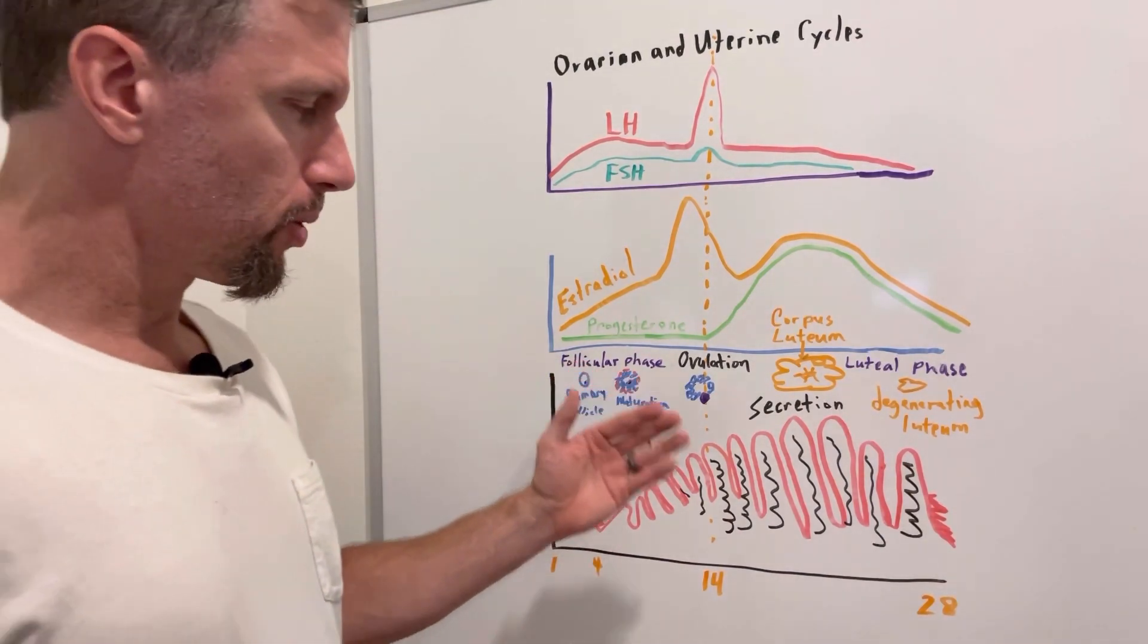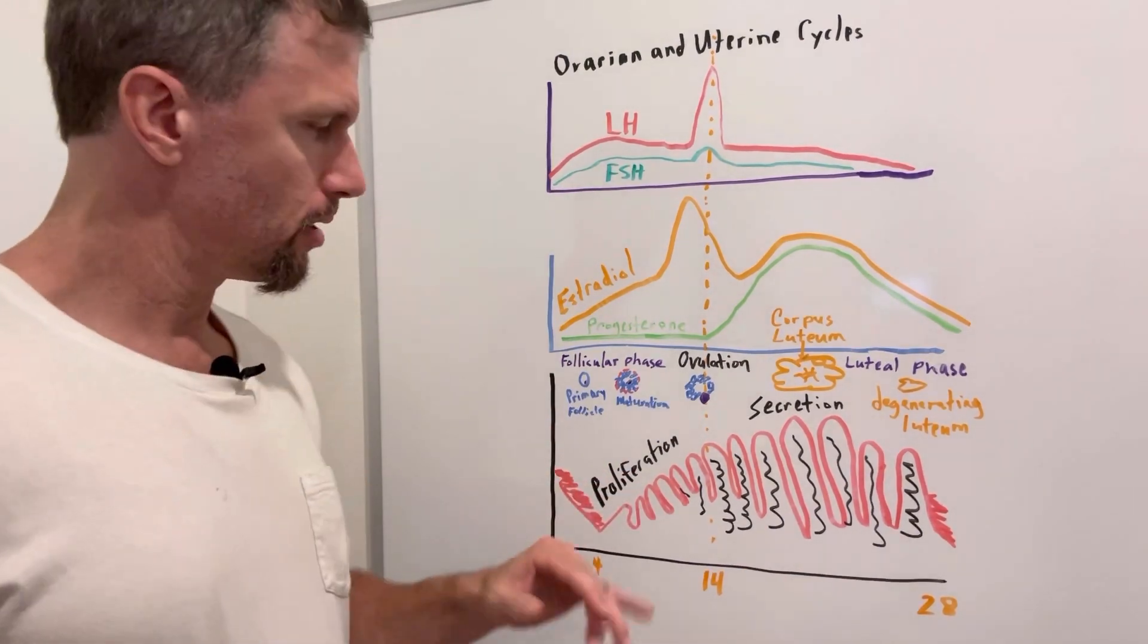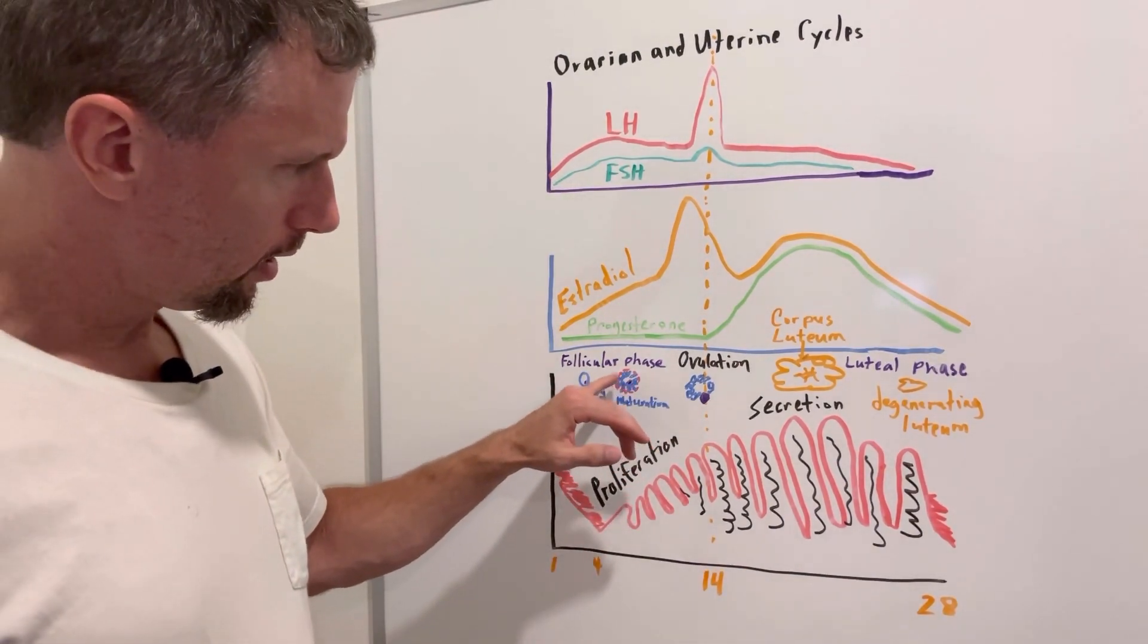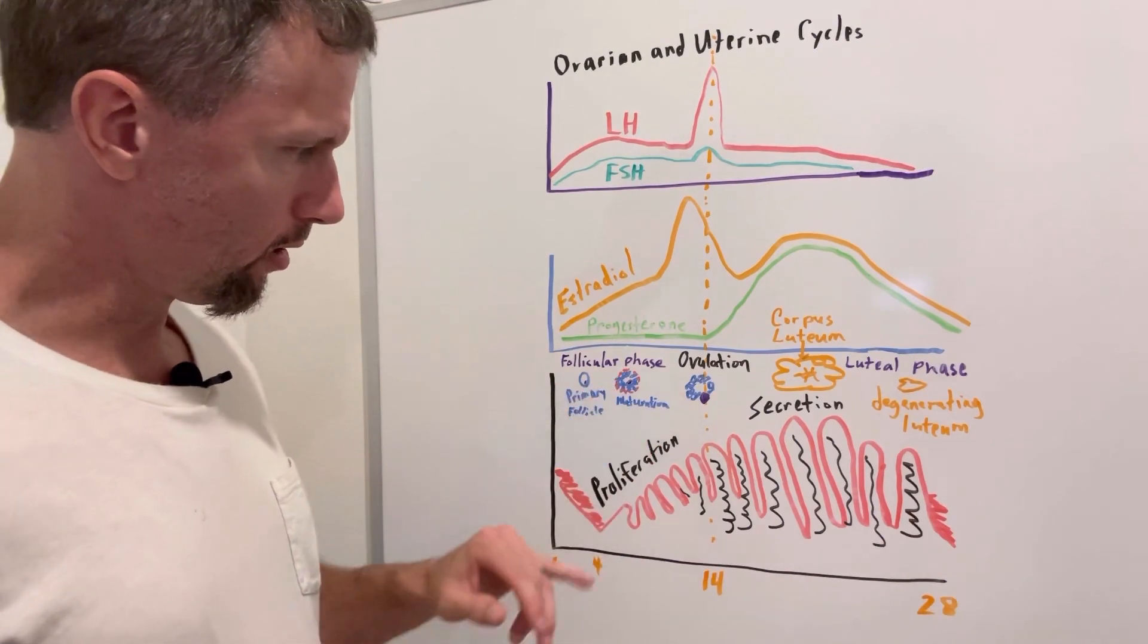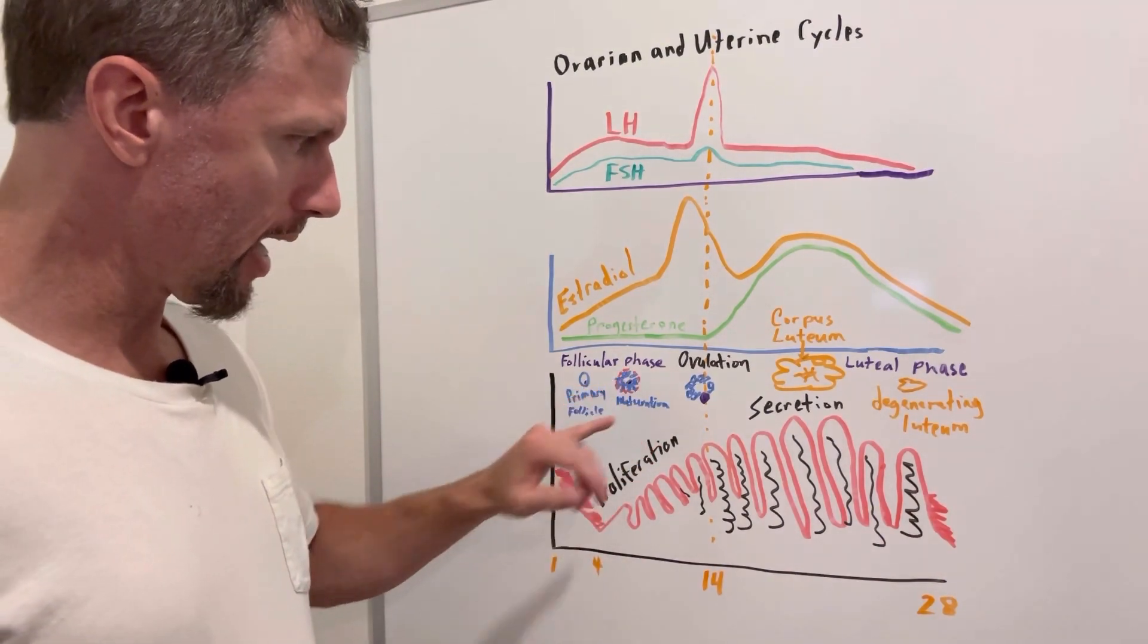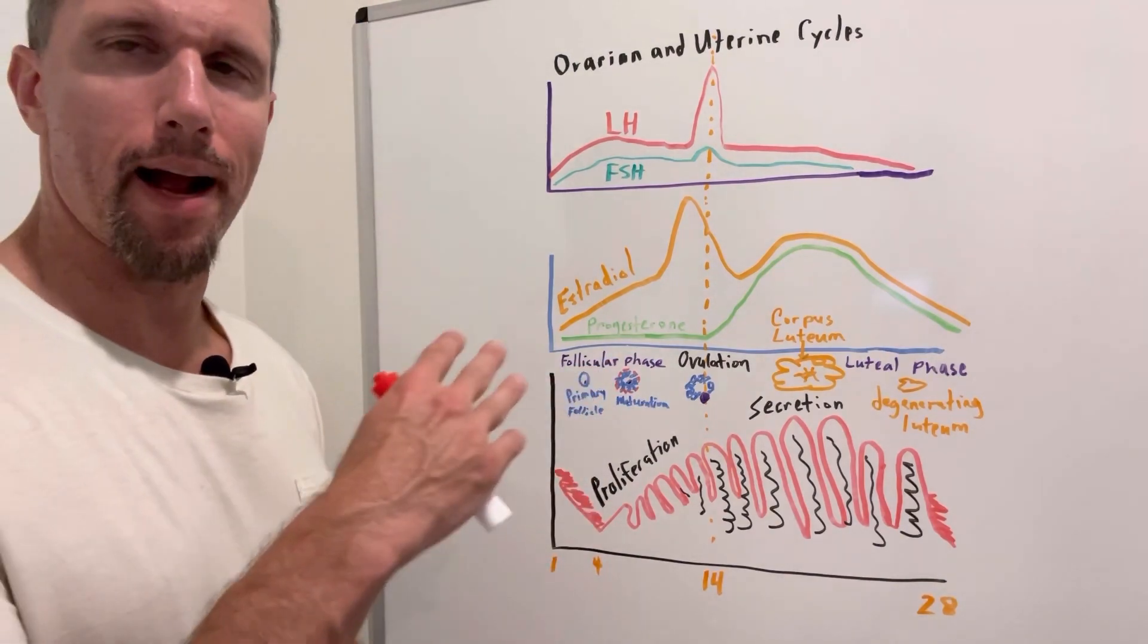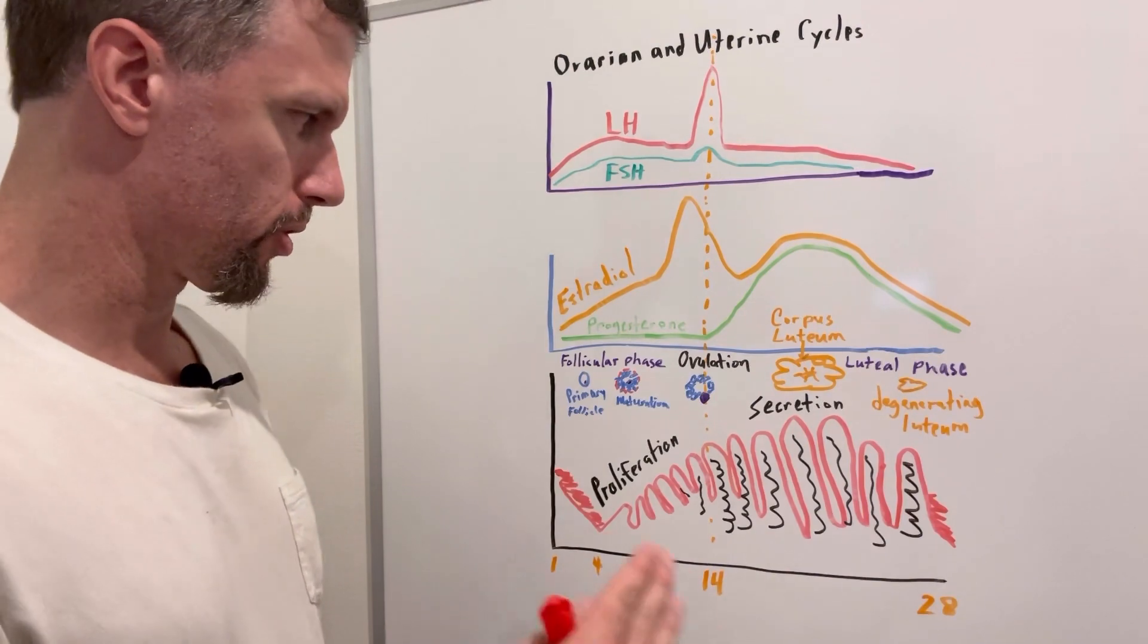And it'll stimulate about 15 or 20 of these to start maturing. As they mature, they start going through mitosis. And these blue cells here are the granulosa cells. You can see the ovum, the egg right there inside. And then this red represents a layer of thecal cells on the outside of this follicle as it's maturing.